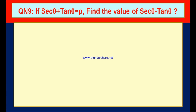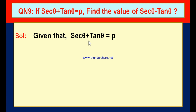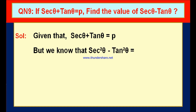This question depends on the second trigonometrical identity, which is secant square theta minus tan square theta is equal to 1. Therefore, in the solution, first of all, let us write what is given. Solution: we have given that secant theta plus tan theta is equal to p. We have to find secant theta minus tan theta. Therefore, let us mention the second trigonometrical identity first of all.